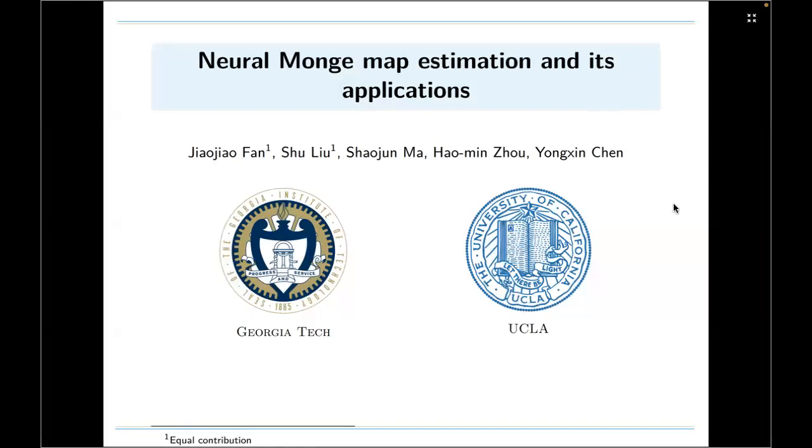Hello, everyone. My name is Jiao Jiao Fan, and today I'm presenting the paper Neural Monge Map Estimation and its Applications. This is joint work with Shu Liu, Shao Junma, Haomingzhou, and Yongxinchen. Shu Liu is from UCLA, and all the others come from Georgia Tech.